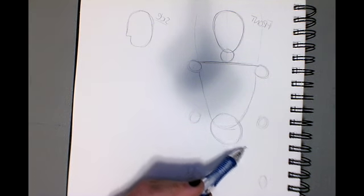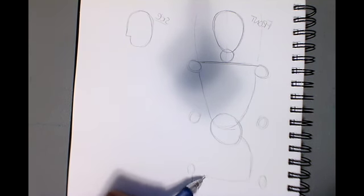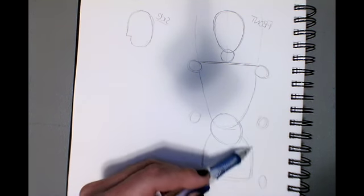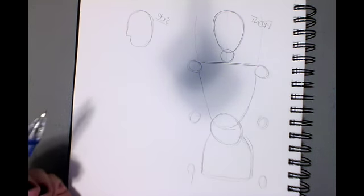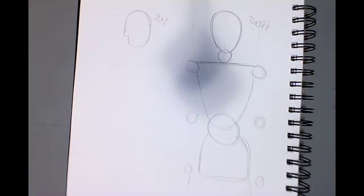Then we're going to do another circle in the middle here that overlaps that shape. And then we're going to give them, or her, some hips. Then we've got knees,